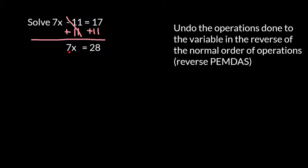Now I'm going to undo the multiplication by dividing both sides by 7. 7 divided by 7 is 1, so we get 1x, or simply x, equals 28 divided by 7, which is going to be 4.